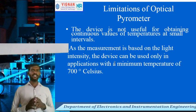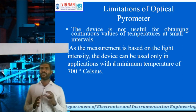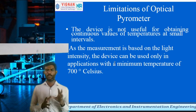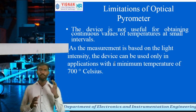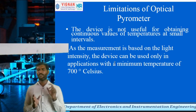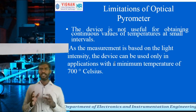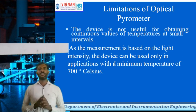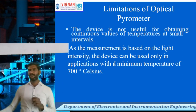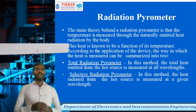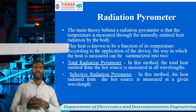Disadvantages and limitations of optical pyrometer: this device is not usable for obtaining continuous values of temperature at small intervals of time. As the measurement is based on light intensity, the device can be used only in applications with a minimum temperature of 700 degrees.